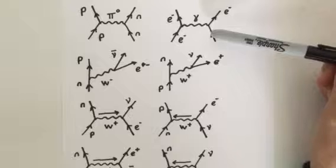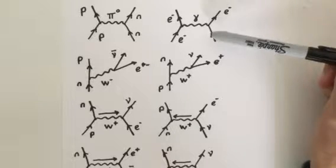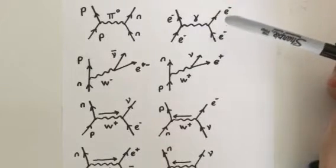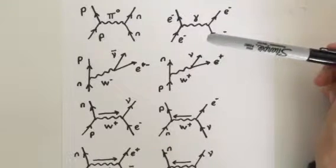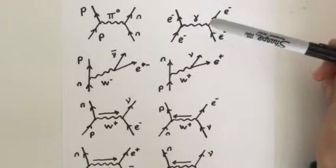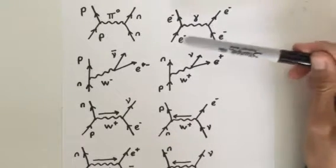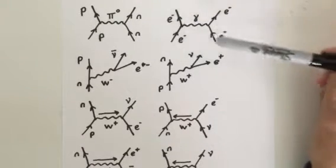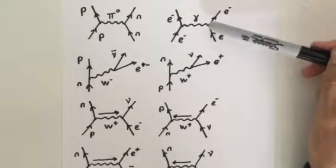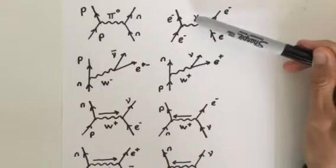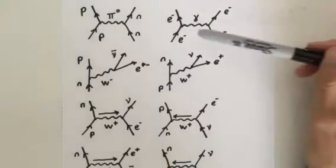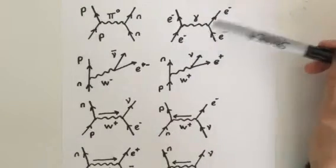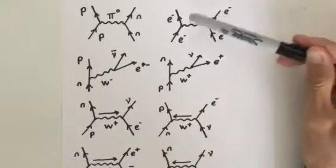Diagram 2 represents the electromagnetic interaction. Two electrons repel each other by the exchange of a virtual photon. Two electrons come in, and by means of a gamma, which is a virtual photon, they repel each other in the opposite direction.